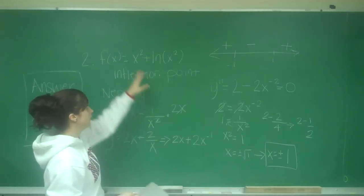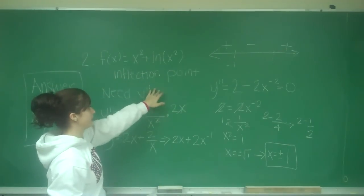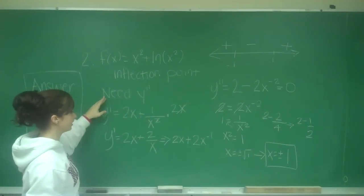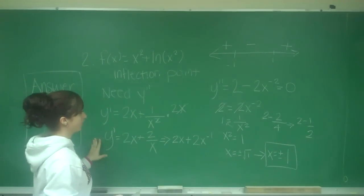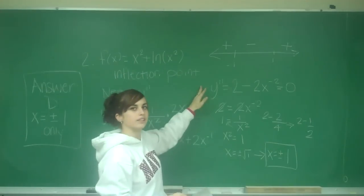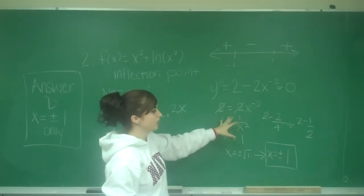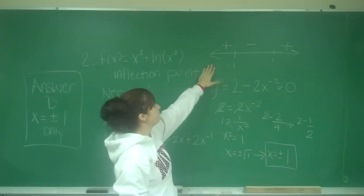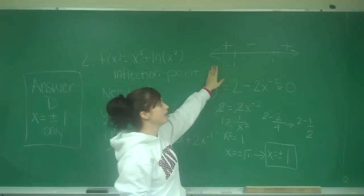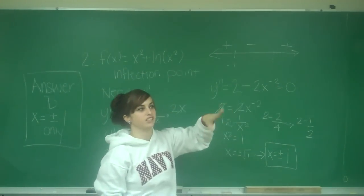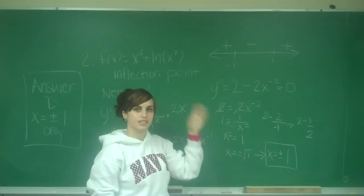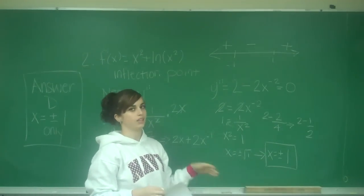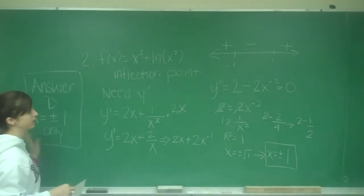So just to review, you have a function, you need the inflection point, which means you need the second derivative. First we found the first derivative, then the second derivative. You set it equal to 0 to find the critical values, and then you plug them onto a number line to make sure that the concavity changed. Because if the concavity didn't change, then it would not be an inflection point.